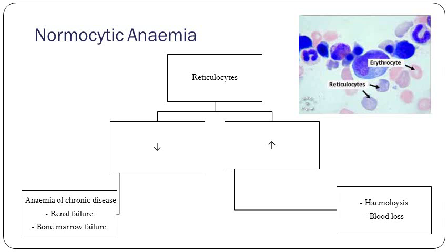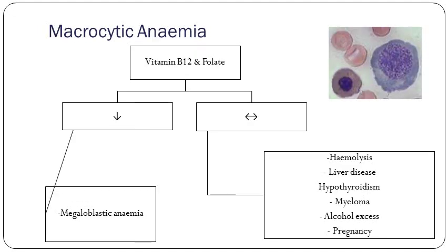If reticulocytes are high, you know you're losing an increased amount of red blood cells and they're trying to compensate — that's your hemolytic anemia causes and any blood loss. If your anemia is macrocytic, you look at vitamin B12 and folate. If that is low, it's called a megaloblastic anemia. If it's within normal range, you have a range of potential differentials and you'd request blood tests appropriately.